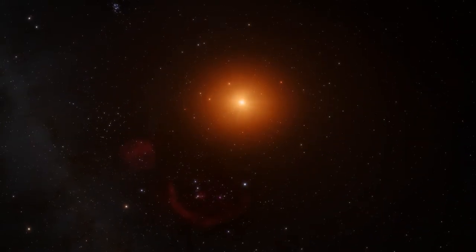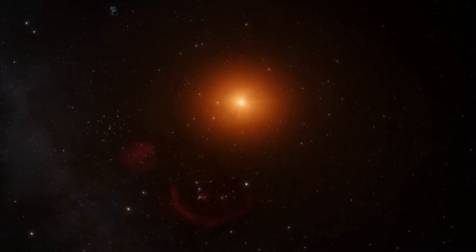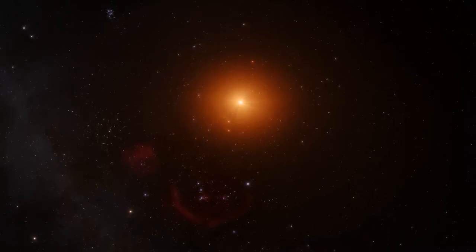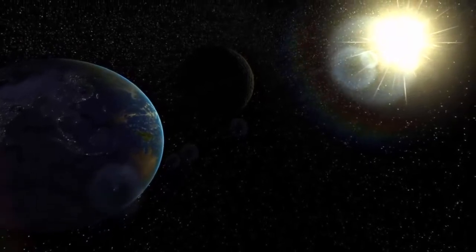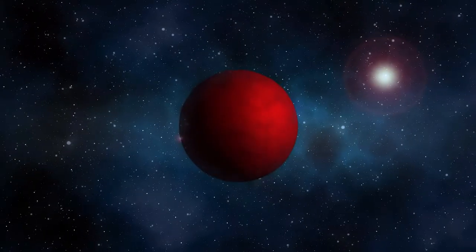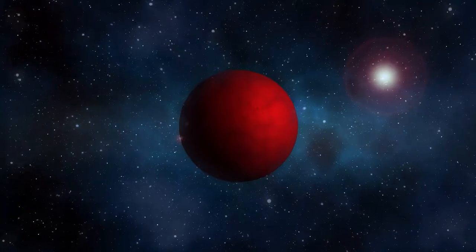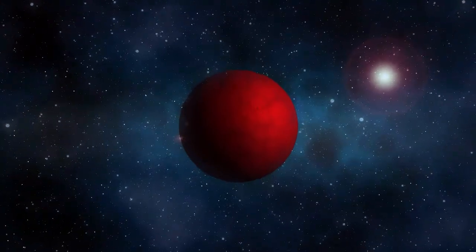Proxima Centauri and Trappist-1 are examples of red dwarf stars that are smaller, fainter, and colder than the sun. Because they are significantly closer to their stars than we are to our sun, planets like Proxima Centauri b and Trappist-1e experience the gravitational pull of their stars much more intensely than we do.